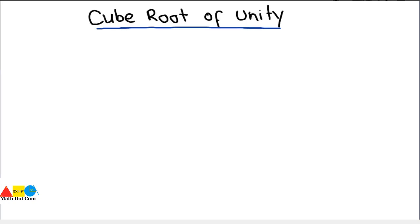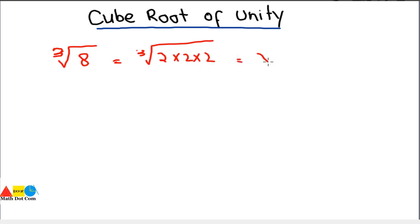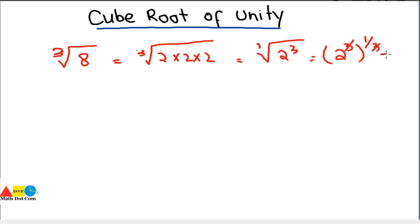Now comes the concept of cube root of unity. The cube root of unity holds importance because of multiple roots. For example, the cube root of 8: the factors of 8 are 2 times 2 times 2, which is 2 raised to power 3. The cube root can be written as the exponent 1/3, so these cancel out and we get 2. The cube root of 8 is 2, meaning 2 multiplied by itself 3 times gives 8.